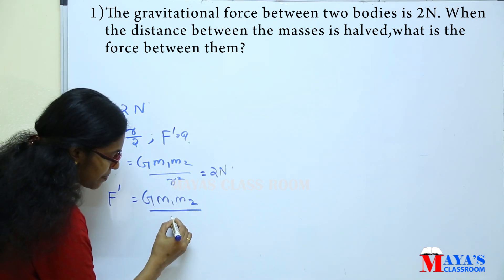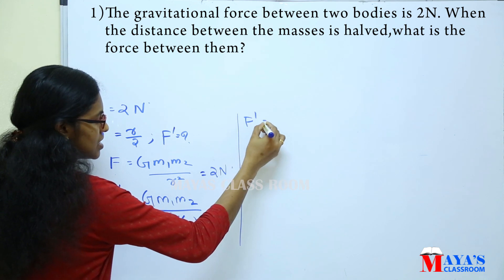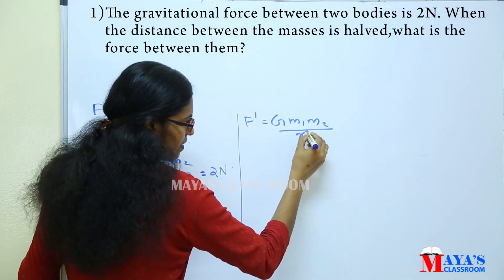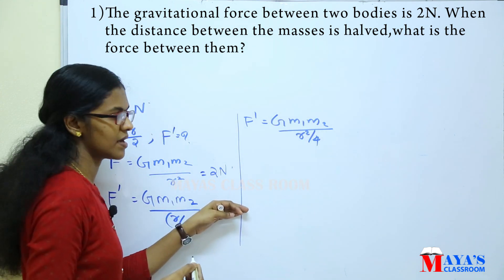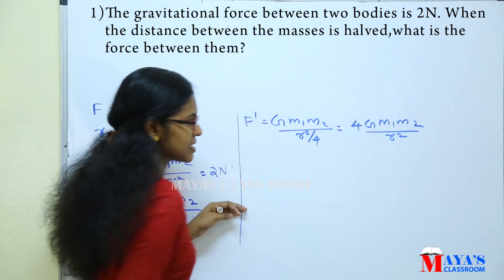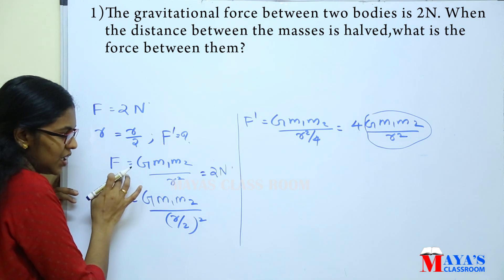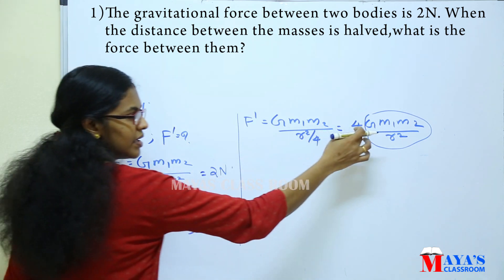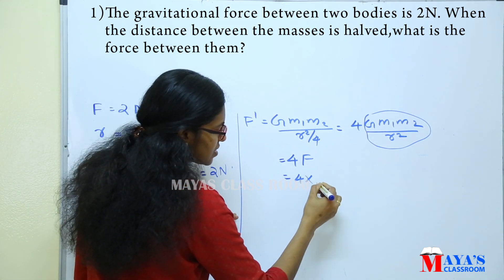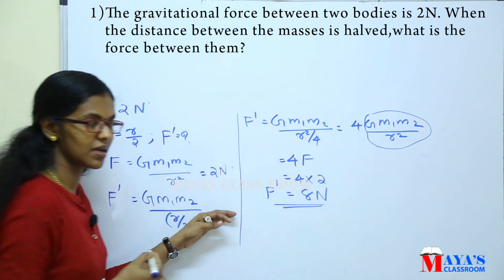The new distance is R by 2. So f' is equal to G times m1 times m2 divided by (r/2)², which gives r² divided by 4 in the denominator. Therefore, f' equals 4 into Gm1m2 divided by r².